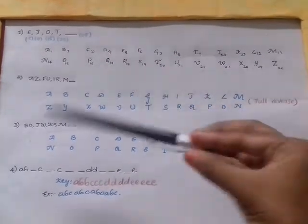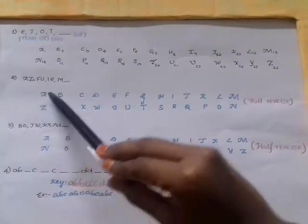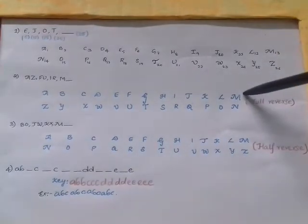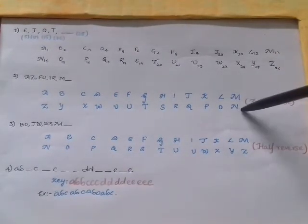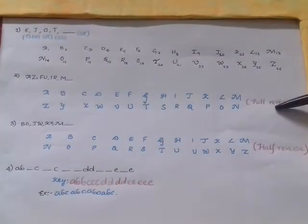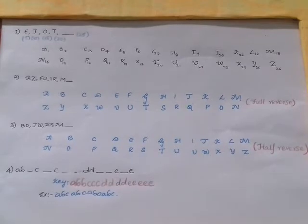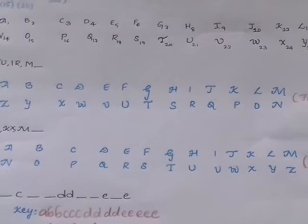Next question is AZ, FU, IR and M. When the alphabets are written in this order and the next alphabet starts from the bottom of M, then this is called full reverse pairs. And there are simple techniques to remember these full reverse pairs as well.